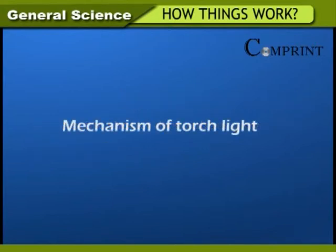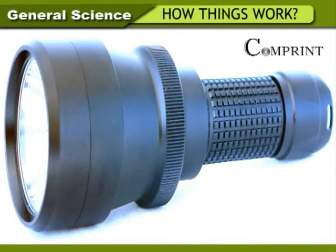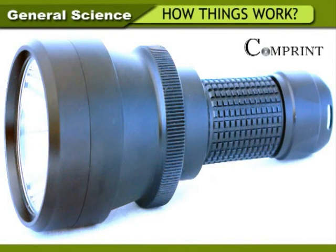Mechanism of torch light. A torch light is used to emit light in the darkness. Its parts are batteries, a bulb, and a switch. There is a hollow cylindrical barrel in the torch light, with a lid that can be opened with a screw to place two or three batteries. The bulb glows when it is switched on with the lid closed. When the switch is on, the circuit is completed, current flows through the circuit, and the bulb glows.